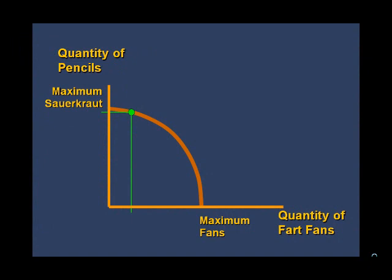Why does rising production lead to increasing cost? Even though sauerkraut and fart fans are made from the same resources, not all resources are equally well suited to produce both. For instance, some land is better suited to growing cabbage used to make sauerkraut than to produce the ingredients needed to make fans, such as plastic and electric motors. Since people are generally rational, we tend to use the best resources first.